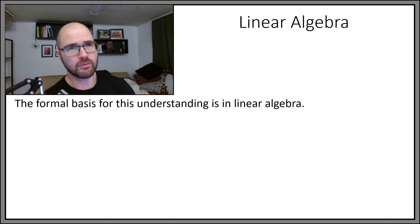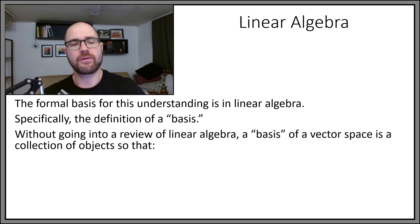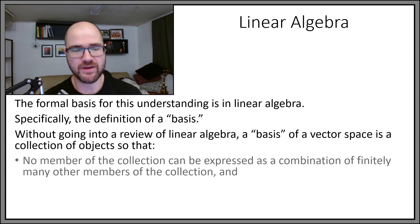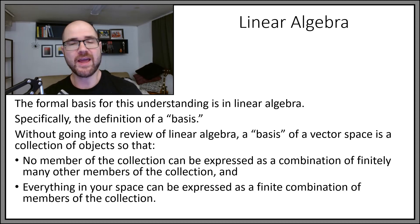Now the formal basis for this is in linear algebra, specifically the word basis. So without going into a review of linear algebra, a basis of a vector space is a collection of objects from that vector space so that no member can be expressed as a combination of other ones, and everything in your space can be expressed as a finite combination of things from your collection. So one object cannot be made from finitely many of the others, but everything can be made from finitely many of those objects.